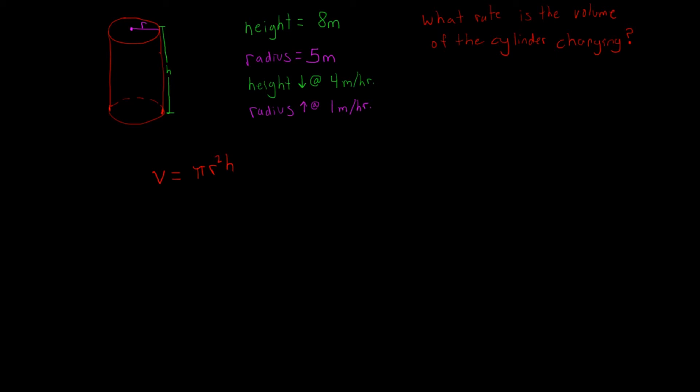How would we be able to find the rate of change of something? Obviously you take the derivative of that equation. We need to take the derivative of both sides with respect to time, because we're not finding how fast it's changing relative to the radius or the height — it's with respect to time because we're seeing how fast it's changing per hour.